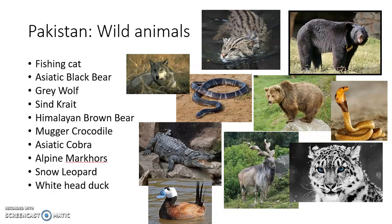Wild animal genetic resources of Pakistan include the fishing cat, Asiatic black bear, gray wolf, and the markhor — Pakistan's national animal. Collectively, these wild animals form part of the animal genetic resources, and it is important to study and conserve biodiversity in Pakistan for both plant varieties and animal species.